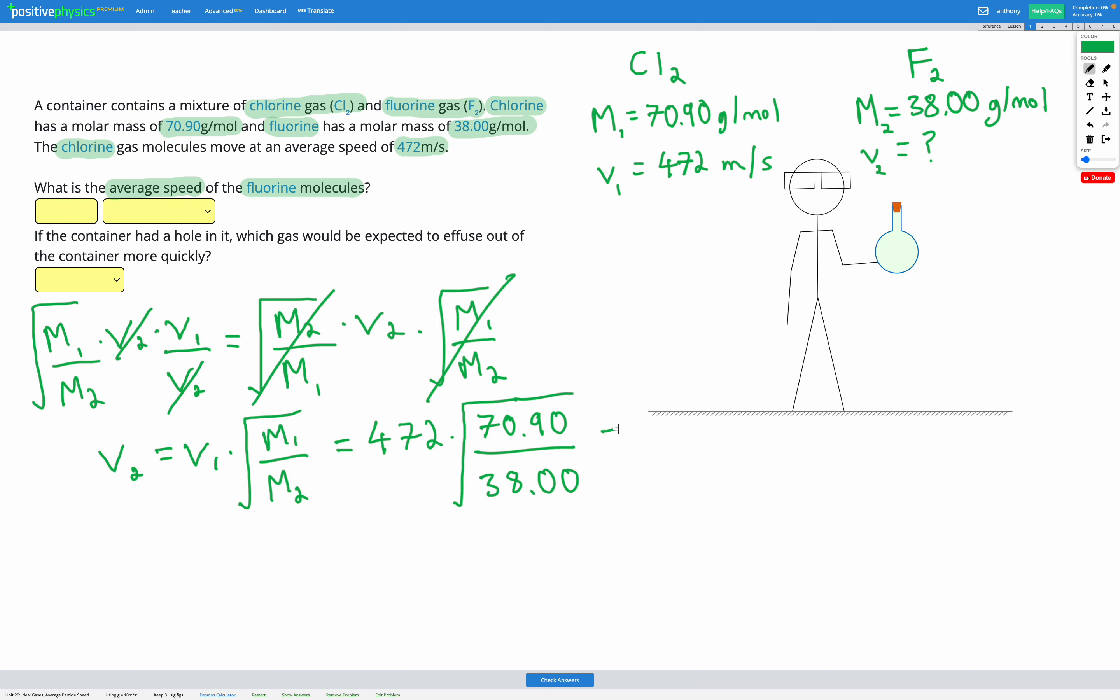And if I put that all in my calculator, that gets me an answer of 645 meters per second. So let's check that in our answer box. 645 meters per second. Awesome.